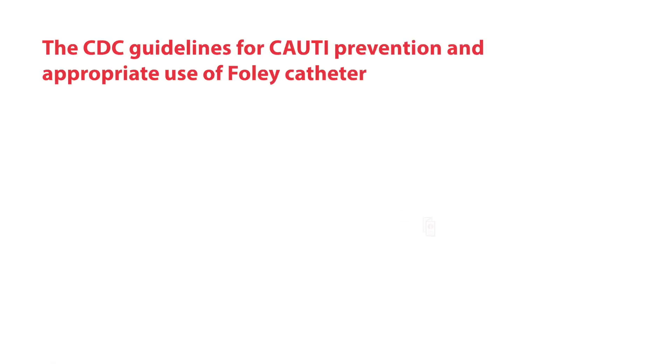Urinary tract infections are classified as HAIs, or healthcare-associated infections. 75% of UTIs are related to urinary catheter use. CDC guidelines for CAUTI prevention provide indications for Foley catheter use that include the following.